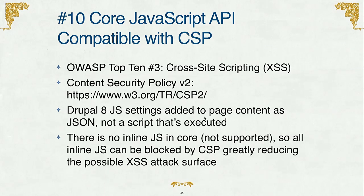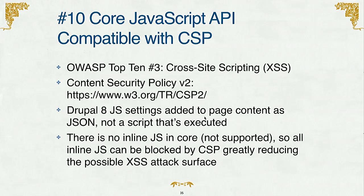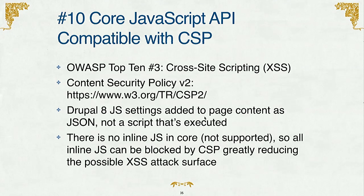The big change in Drupal 8 is that JavaScript settings — previously an inline script tag that every Drupal page had — are now written to the page content as a JSON string instead of inline JavaScript. A separate loader script loaded as a file reads that JSON string and creates the object in the page. Drupal 8 core in the render API also removed support for inline JavaScript being rendered at all. If you're in the habit of throwing JavaScript inline in a page, you should now put that JavaScript into a file — no inline JavaScript means you can set a Content Security Policy header saying there is no inline JavaScript, which neutralizes a whole broad range of cross-site scripting attacks.